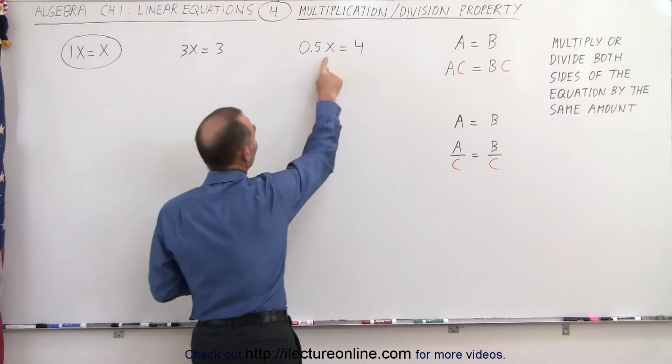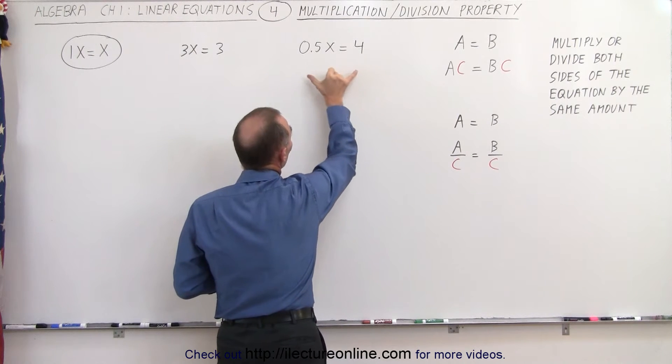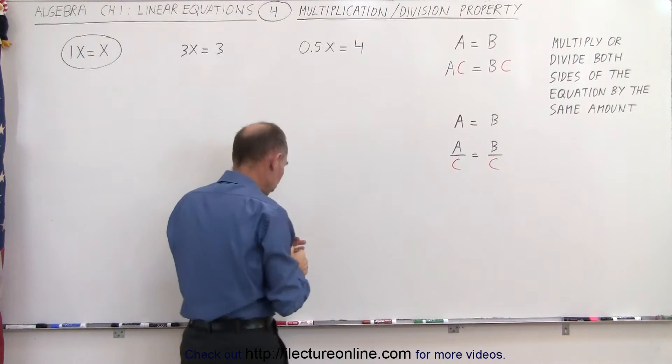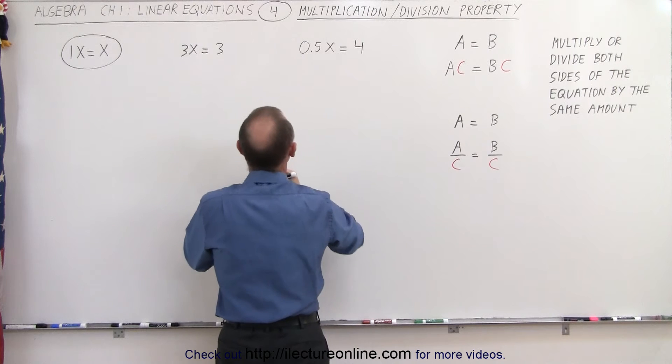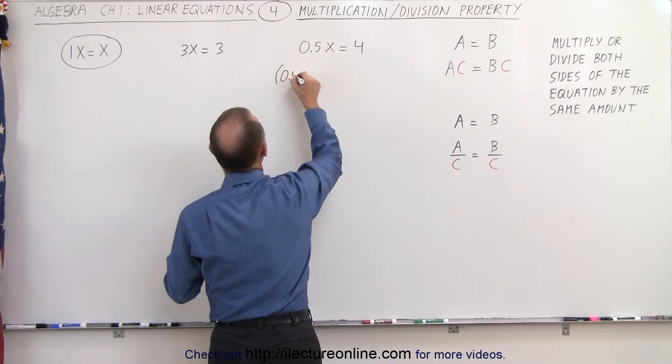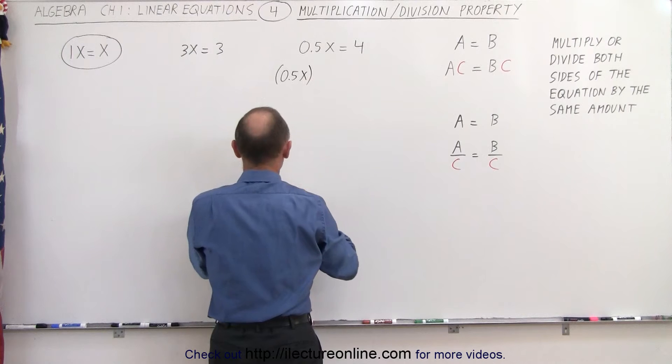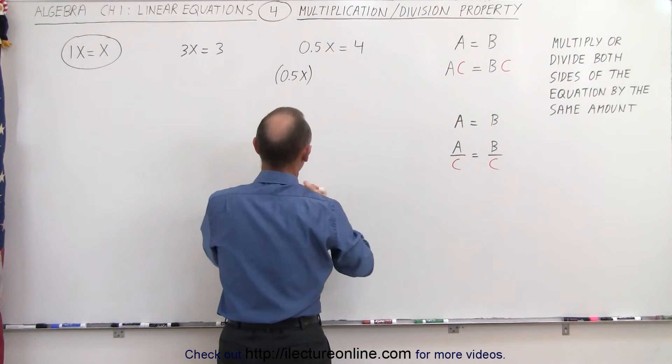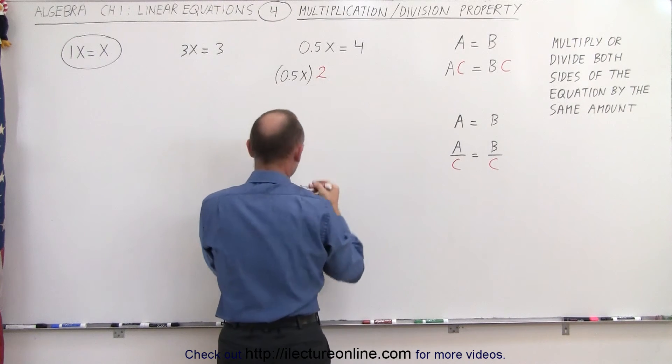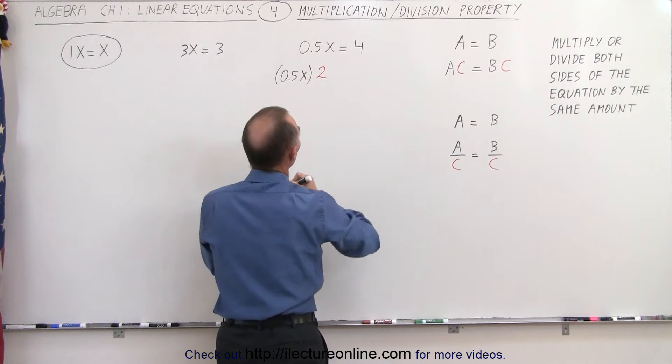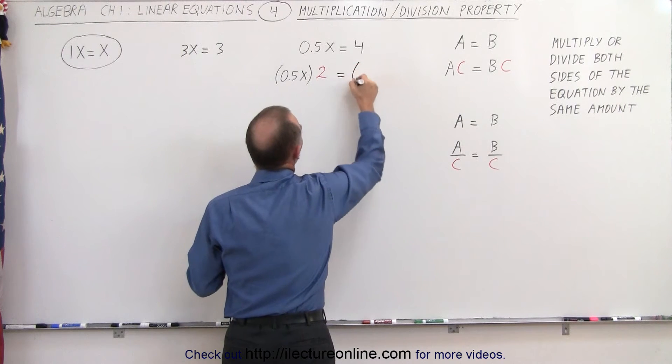Let's say we have 0.5 times X equals 4. What if I multiply both sides by 2? So what I'm going to do here is take 0.5X and multiply it times 2. And of course, if I'm going to multiply the left side by 2, I must also multiply the right side by 2.